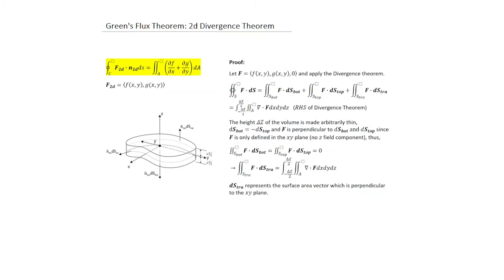The next slide is a summary of the slides to follow. This is a relatively short lecture with effectively only two items to be considered. The next step is to prove Green's Flux Theorem starting with the Divergence Theorem. We can also call Green's Flux Theorem nothing more than a 2D version of the Divergence Theorem.